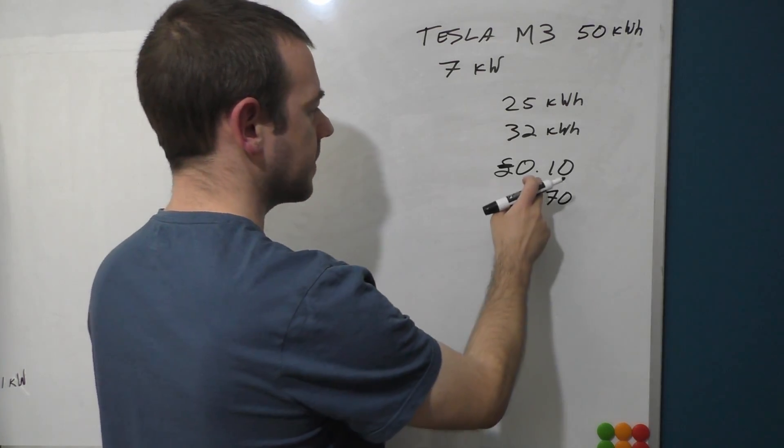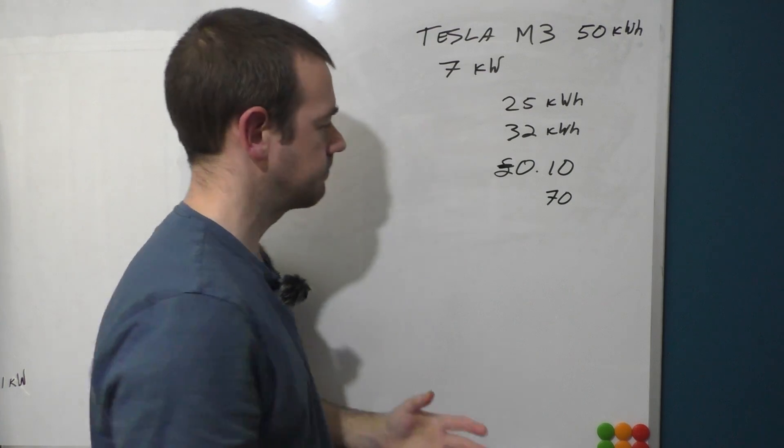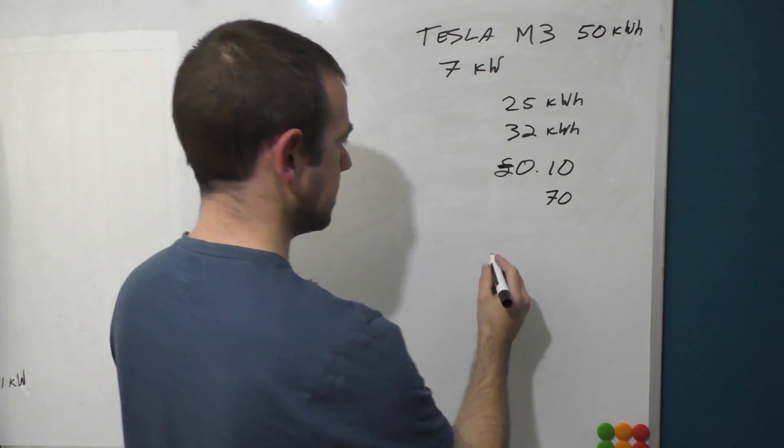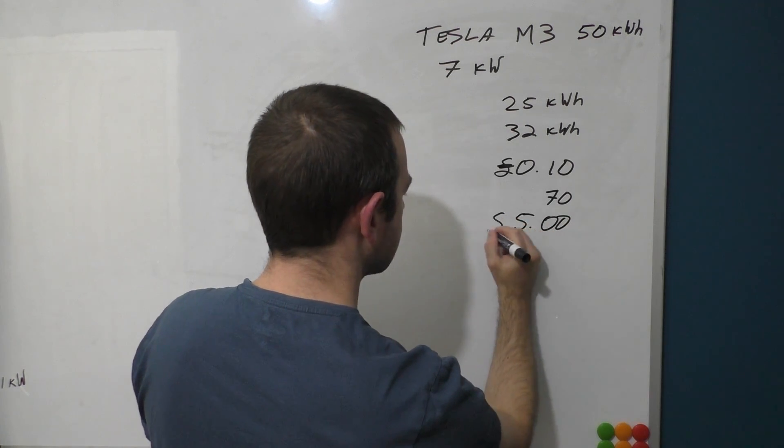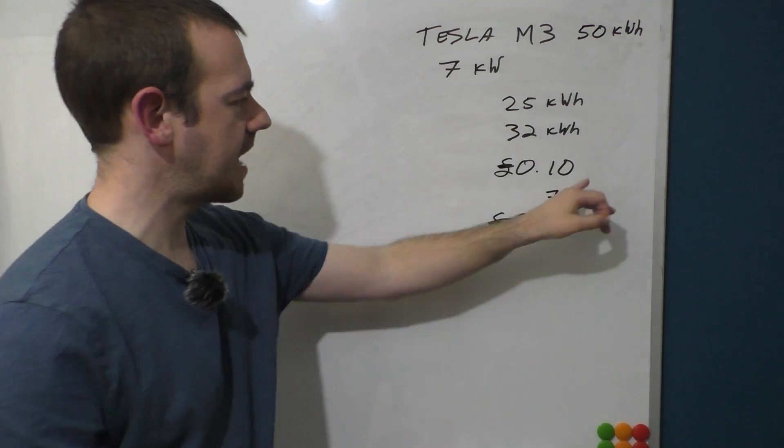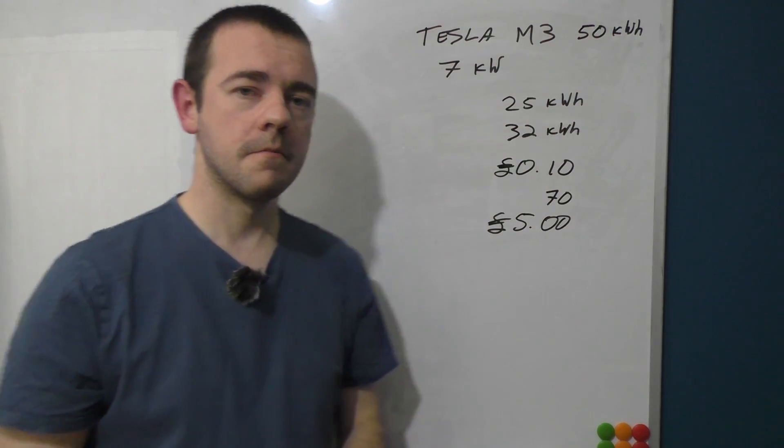Then it would literally be a case of 10 pence times 50 kilowatt-hours, so 10 times 50, which is five pounds. It would cost me at 10 pence per kilowatt-hour, five pounds to fill up my Model 3. It is literally as straightforward as that.